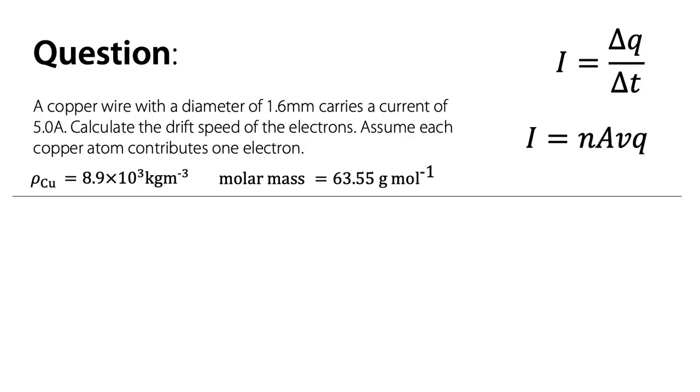We'll calculate the drift speed of the electrons inside that copper wire. The assumption we're going to make is each copper atom contributes one electron. So when we're looking at the copper, we're seeing a massive lattice of copper atoms, and for each copper atom there is in that lattice, one electron will be part of the metallic bonding.